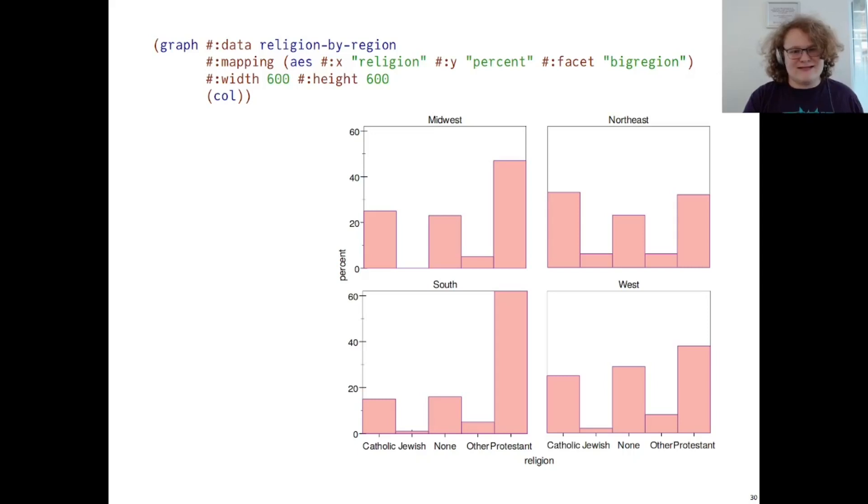Finally, we can save this as the variable religion by region, map the x-axis to religion, the y-axis to percent, and facet on the variable big region. We use the col renderer to tell Graphite to draw a bar chart, and now we can make some extrapolations. For example, we know that in this dataset, there were approximately equal Catholic and Protestant respondents in the Northeast.